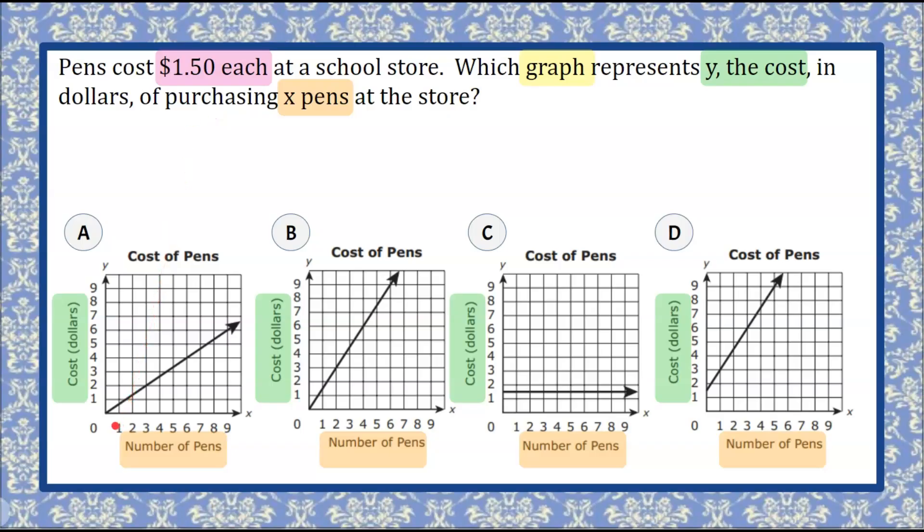Let's look at that first. I look at the origin, (0, 0). I purchase zero pens, I spend zero dollars. This line begins at the origin, so it could be graph A.